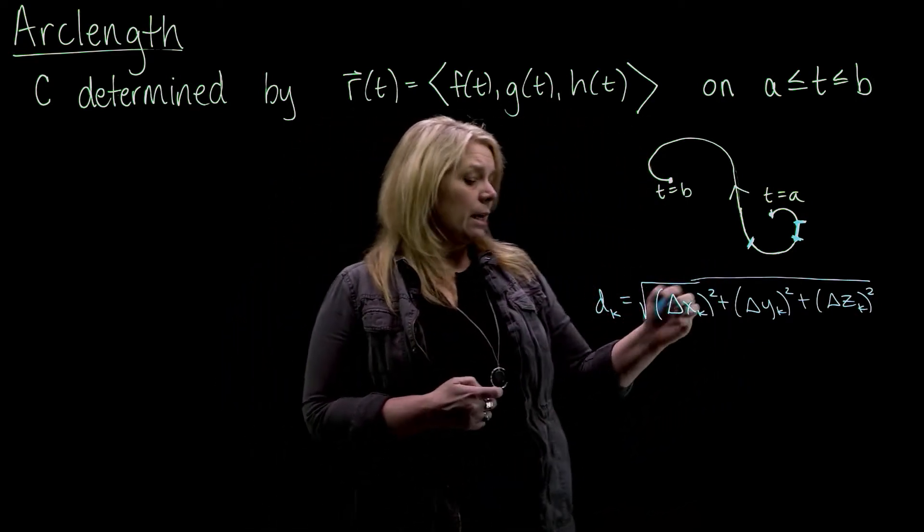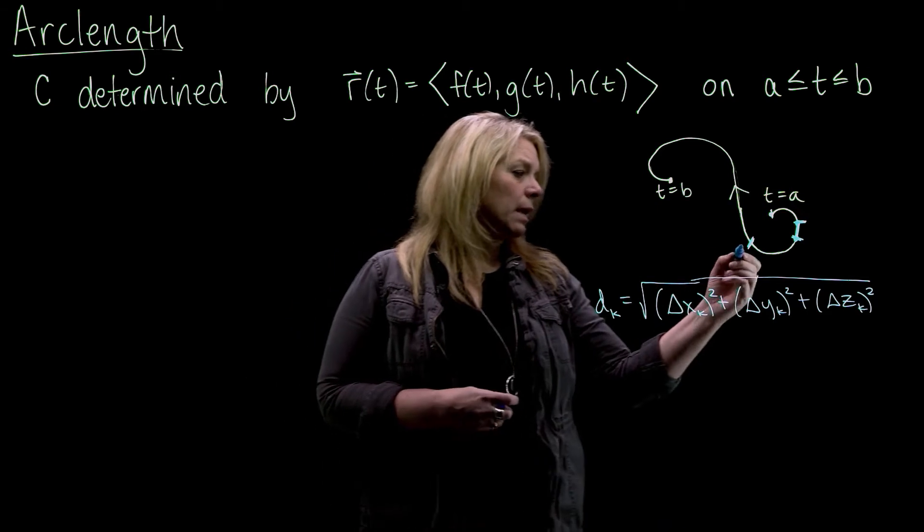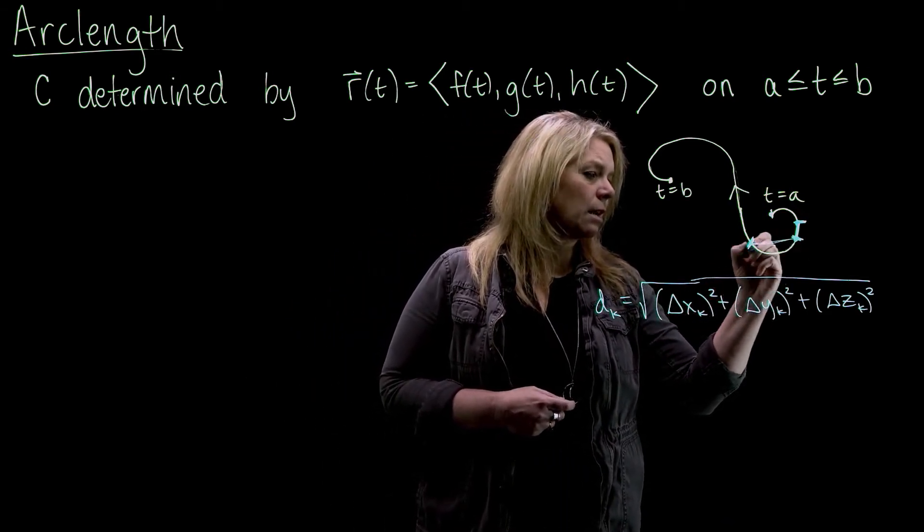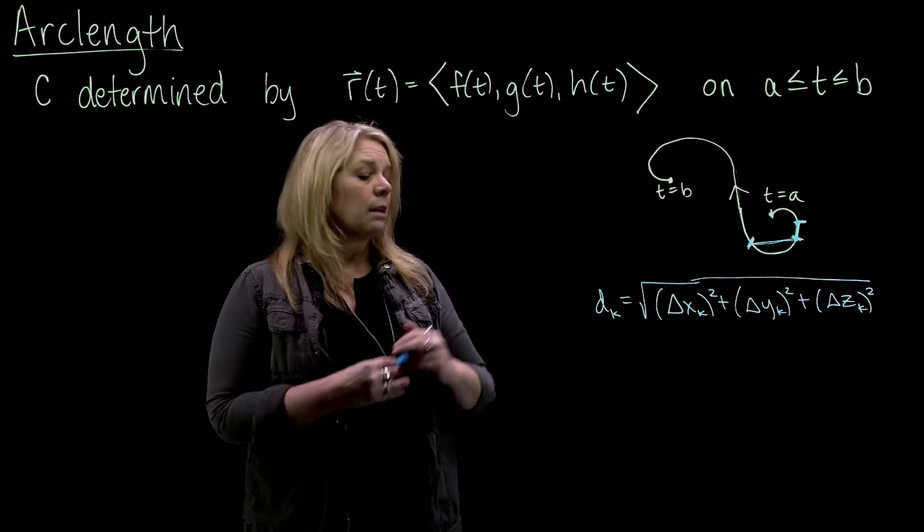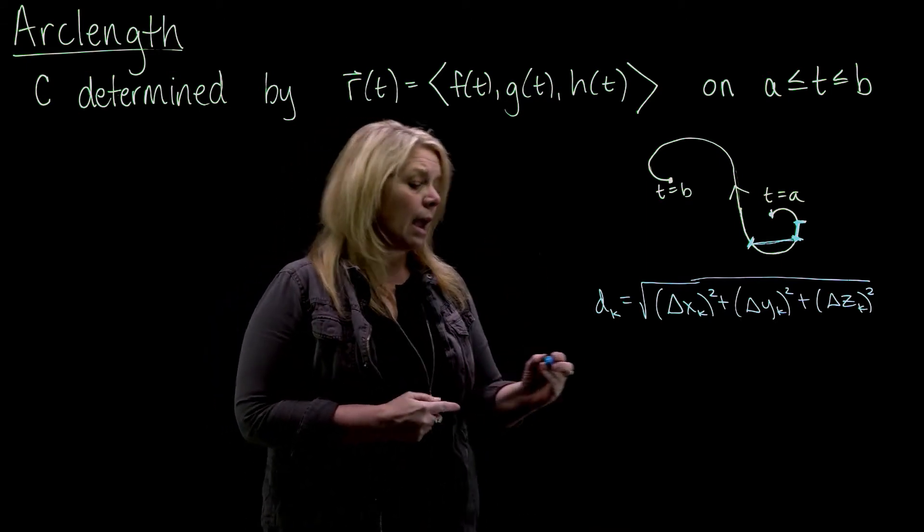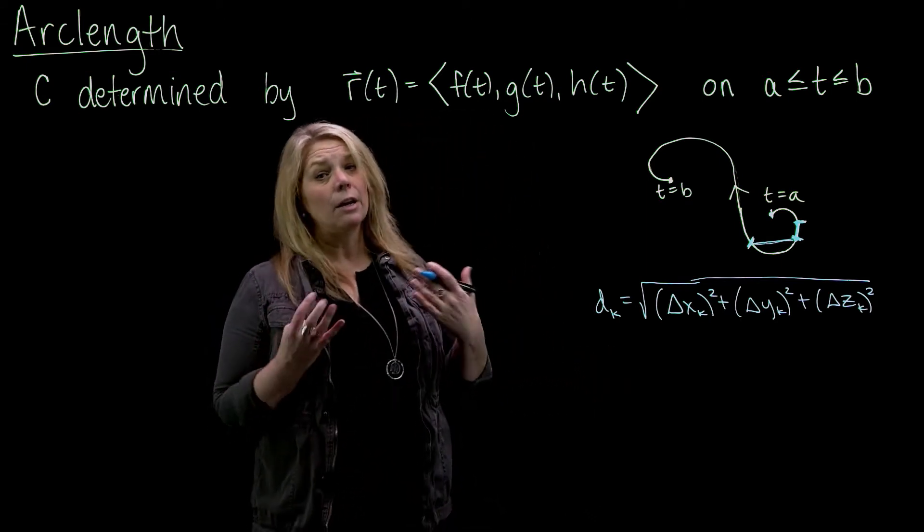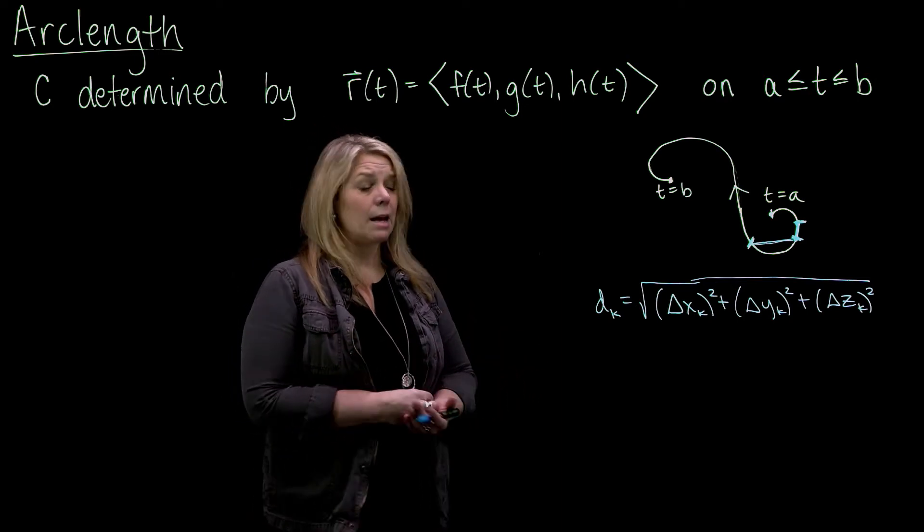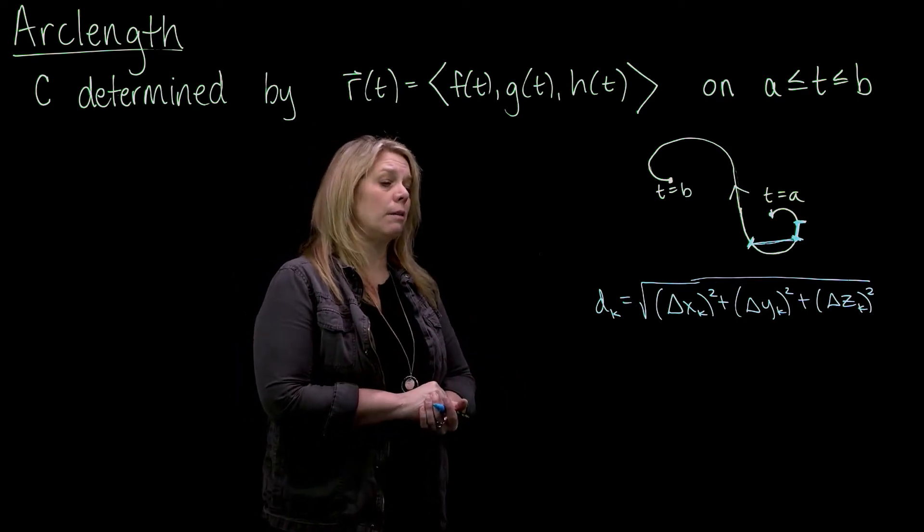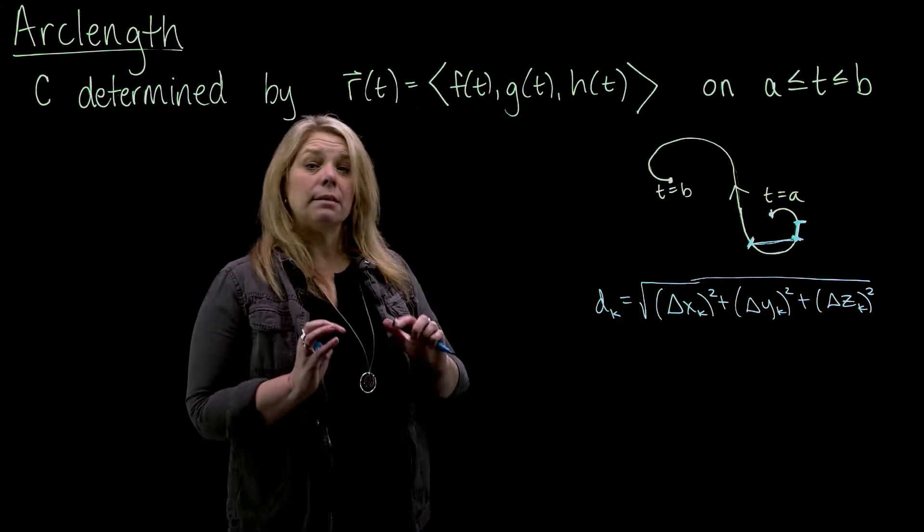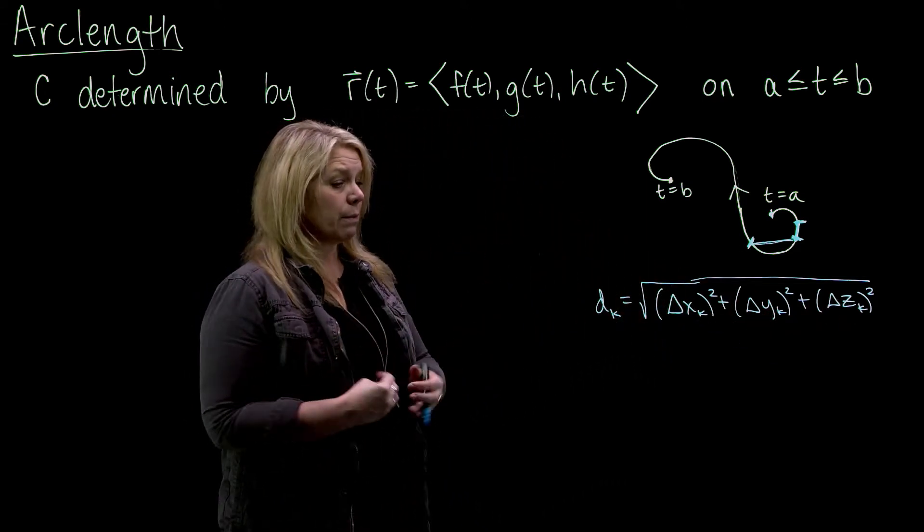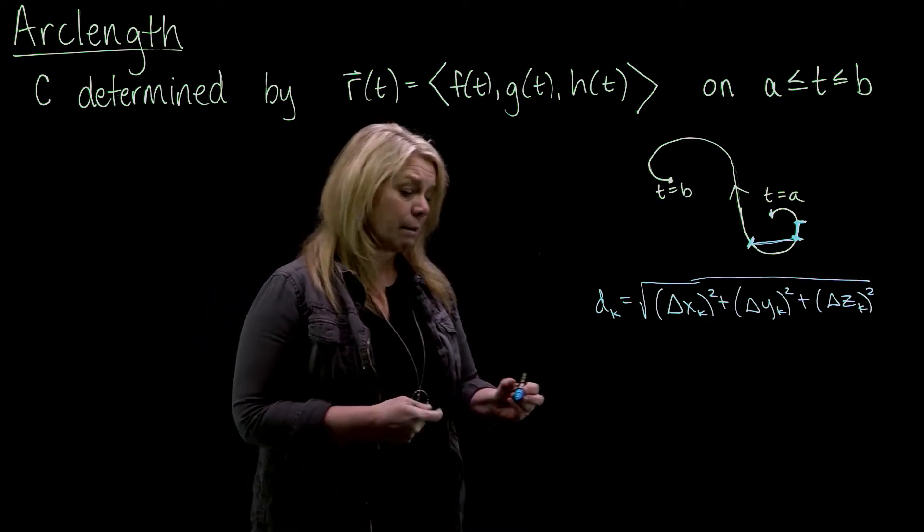The basic idea here, the reason I've used a k here is because I have different distances on different pieces here. So we'd calculate all those distances, we would add them all up, and then in order to get an integral formula, we're going to take the limit as the norm of some partition approaches zero. So if I add all these up, I don't technically get a Riemann sum. You have to do a little bit of symbolic manipulation to get a Riemann sum.